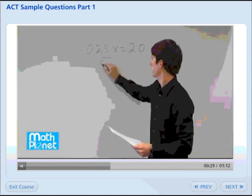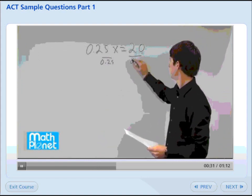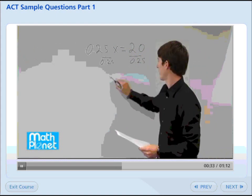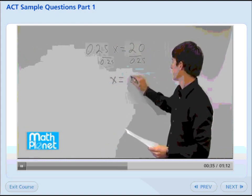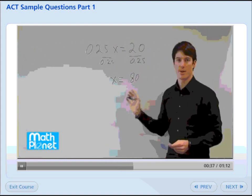So from here we can divide both sides by 0.25 to find that x is equal to 80.